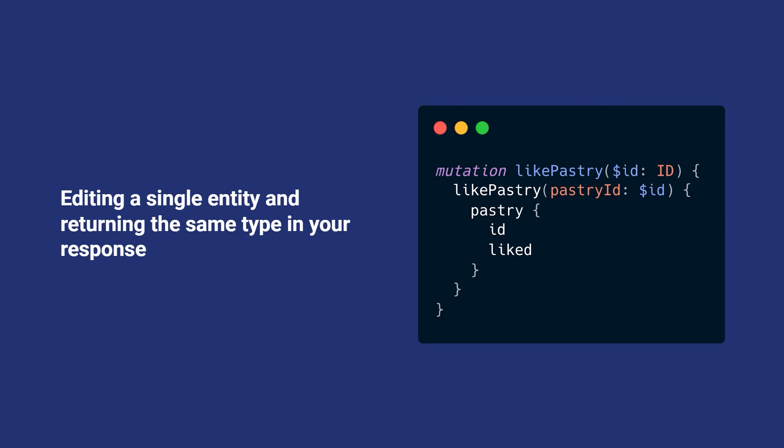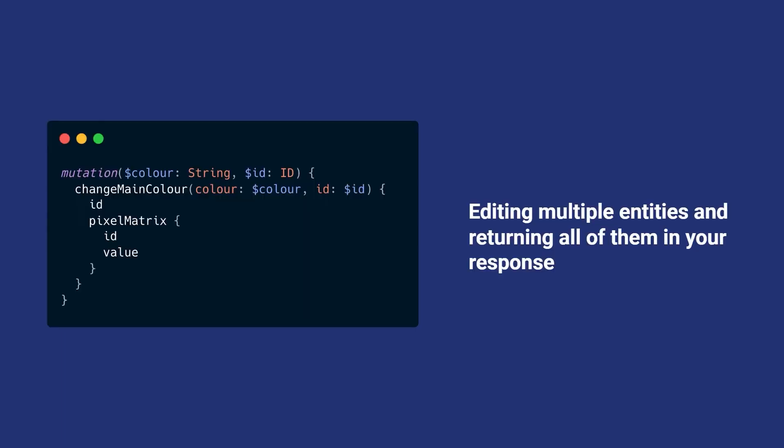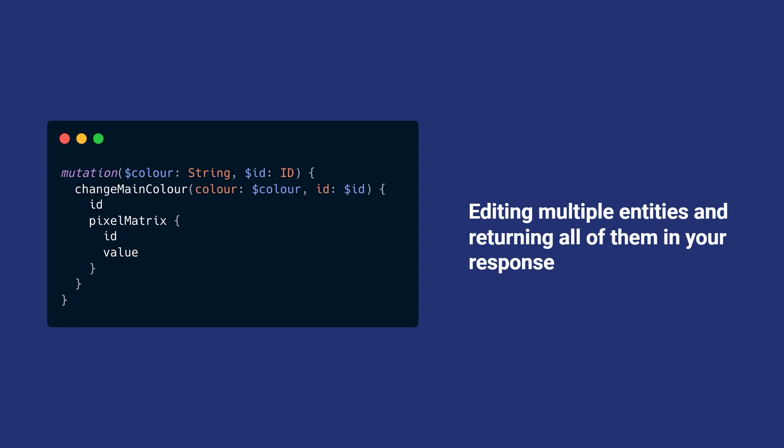So when do automatic updates get applied? The easiest one: I have a single entity, I'm changing it, I'm returning it with its ID and its changed value — very simple. It updated it in my UI automatically. Same thing goes for multiple entities — you have to return all of them, even the ones that weren't changed, with the IDs and the changed fields, and it'll go and update that.